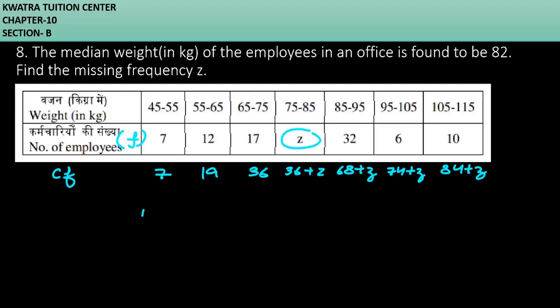We know which formula we have to use for median. What is our median class here? It will be 75 to 85, because 82 is getting between 75 and 85. In this case, the frequency f is Z, and CF is 36.